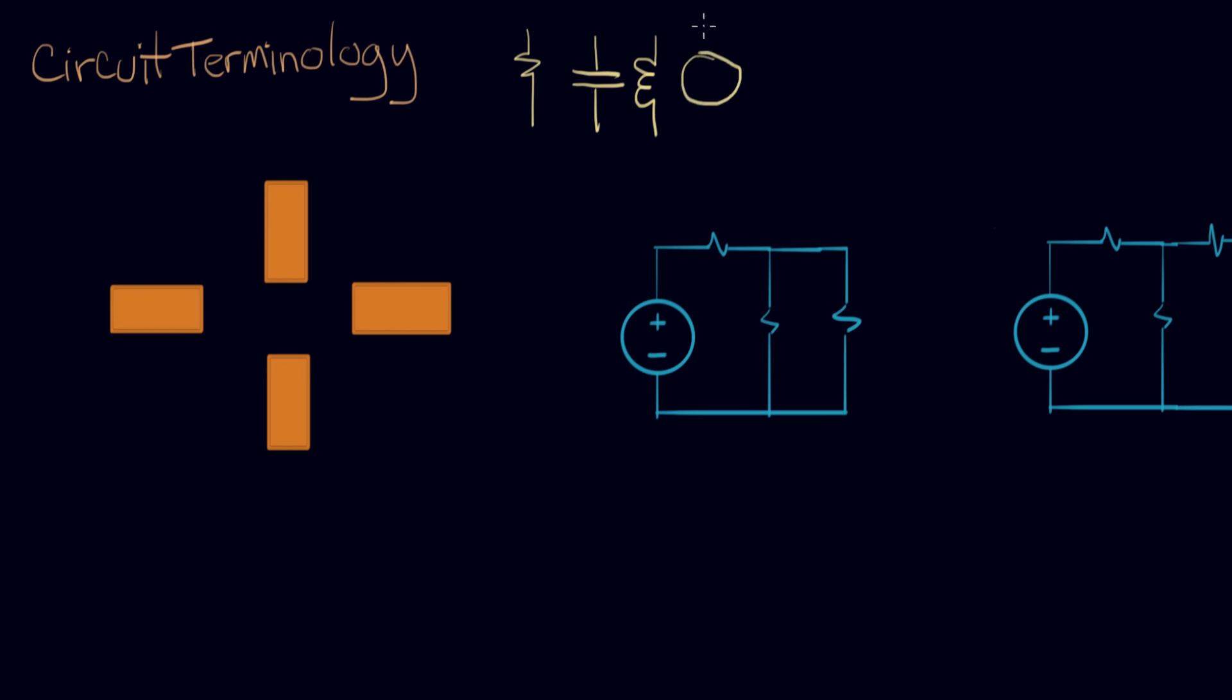In addition, we have some sources, like a voltage source, or for example, a current source. Those would be the components or elements of a circuit. Elements.